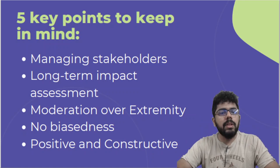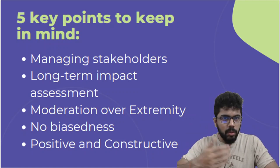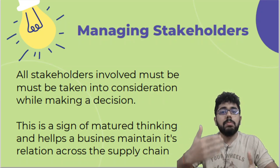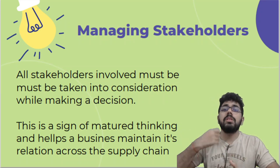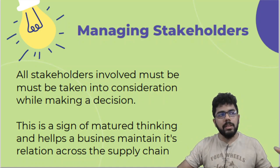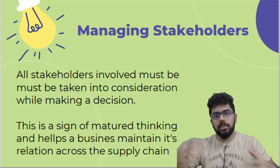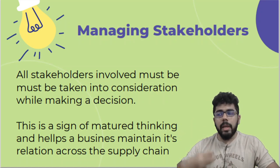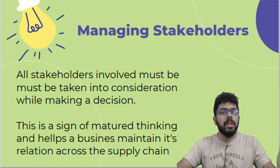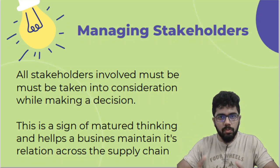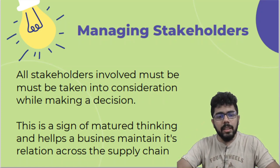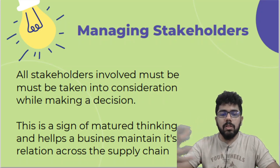Looking at the first point — managing stakeholders. All stakeholders involved in the decision must be considered, and you should think about everyone because your decision is going to affect them. Suppose I am a production company — I'll have to think about everyone in the supply chain, from my suppliers to my customers to the retailers to the wholesalers. Any change I am making is going to affect every stakeholder in some way. You shouldn't think in a one-sided view, as that is a sign of more mature thinking.